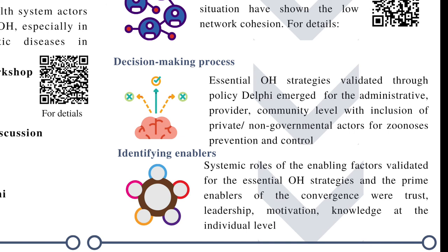In this study, five zoonoses — rabies, brucellosis, avian influenza, swine flu, and Crimean-Congo hemorrhagic fever — were prioritized on the basis of collaboration need. The One Health actors were identified with their interest and influence as players, crowd, subject, or contractors on the prioritized zoonoses. The network cohesion was found to be low, and the essential One Health strategies were validated through Policy Delphi.